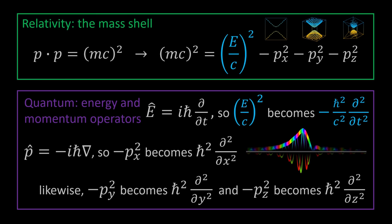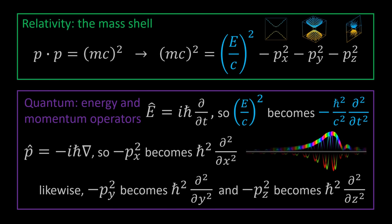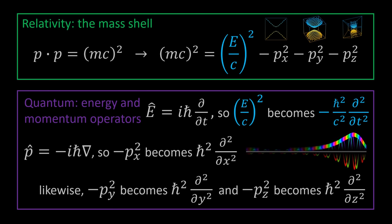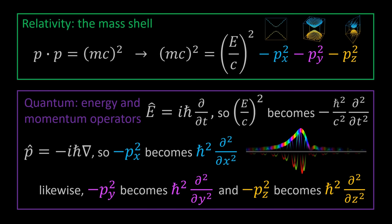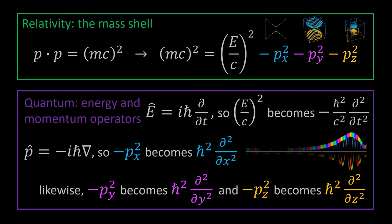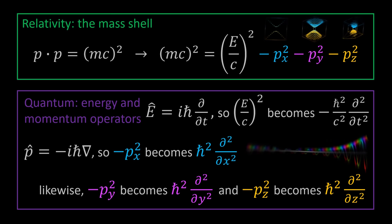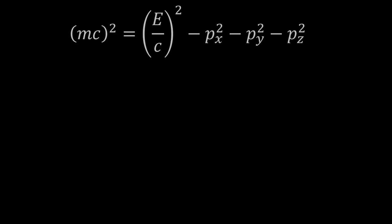Looking at the right-hand side of our mass shell equation, we see energy and momentum. The E/c² term we replace by applying the energy operator twice and dividing by c², so that term becomes negative ħ² over c² times the second derivative with respect to time. Similarly, the momentum terms become ħ² times second spatial derivatives. The derivation of the Klein-Gordon equation is very reminiscent of the derivation of the Schrödinger equation, except now we're using the mass shell instead of p²/2m.